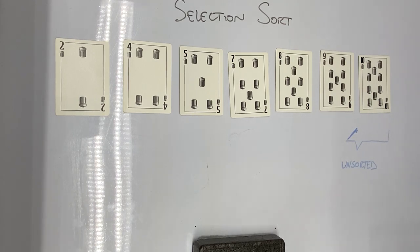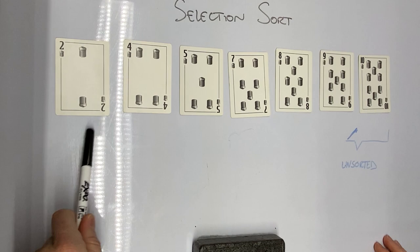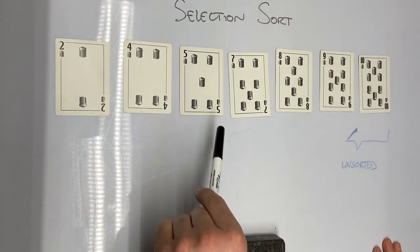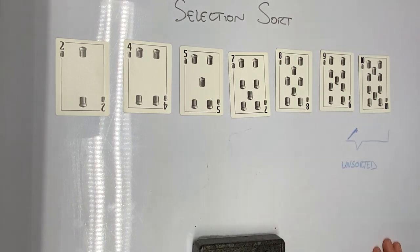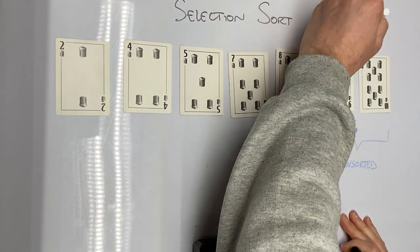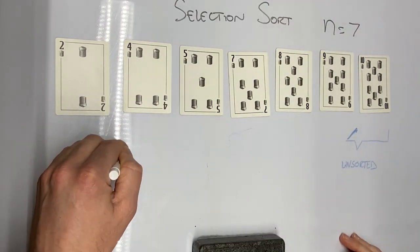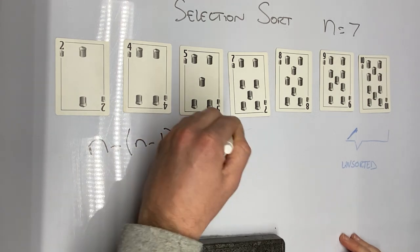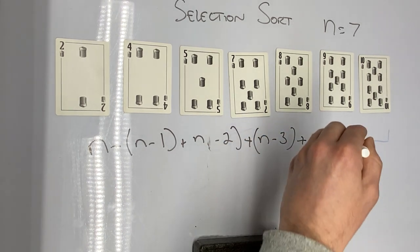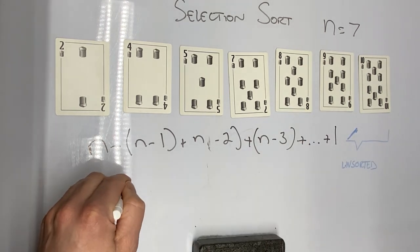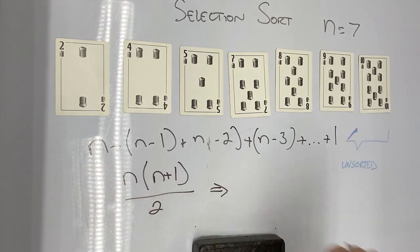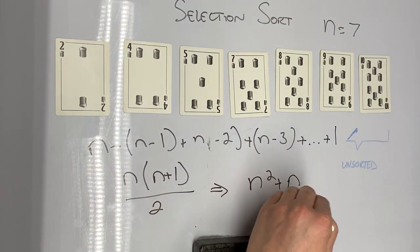One thing to point out: on the first pass through the unsorted region I looked at seven cards, the next pass six cards, then five, four, three, two, and finally just that one final card. So the total number of cards looked at — with seven cards in this example — was n, then n minus one, then n minus two, then n minus three, and so on until I got to one. This can be written as n multiplied by n plus one, divided by two, which expands to n squared plus n over two.